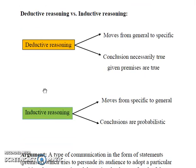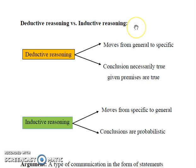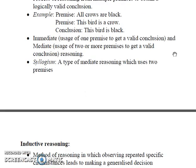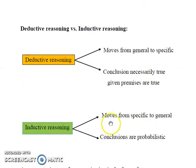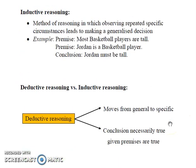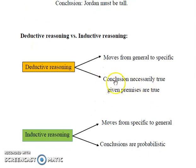So let's compare deductive reasoning and inductive reasoning and see how they differ. The first main difference is that deductive reasoning moves from general to specific. Like in the previous example, as shown here, we see 'all crows are black' — we have generalized the color to each and every member of the crow community. Whereas in inductive reasoning, we move from specific to general, as shown in this example.